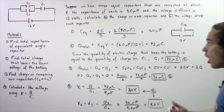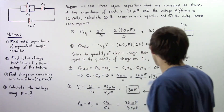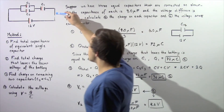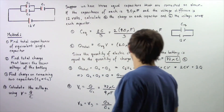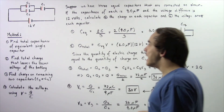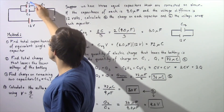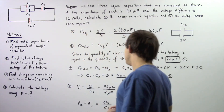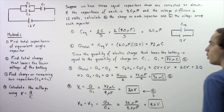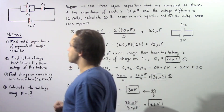To summarize: capacitors two and three each carry 36 microcoulombs, and capacitor one carries 72 microcoulombs. The voltage across capacitor one is 8 volts, and the voltage across each of the two parallel capacitors is 4 volts. Notice that 8 volts plus 4 volts gives back our 12 volts, confirming the result.